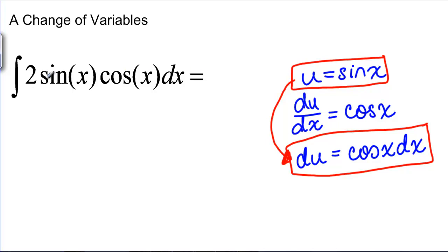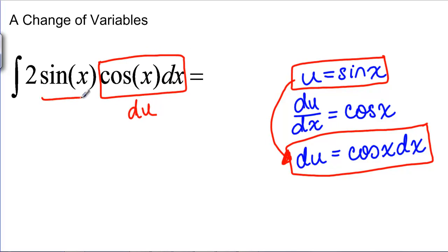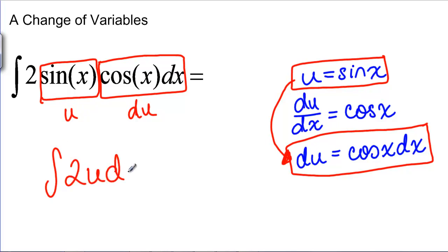Now I can come over to my problem and say: cosine of X DX can be renamed DU, and sine of X can be renamed U. If I change variables, my new integral is 2U DU. That is a lot easier to integrate — I know the antiderivative of 2U, it's just U squared. So I get U squared plus C.